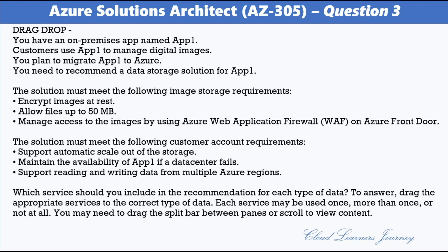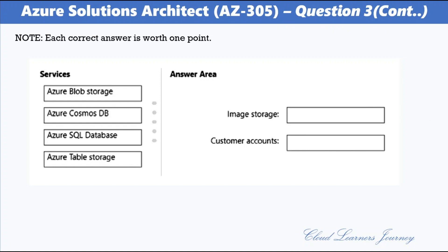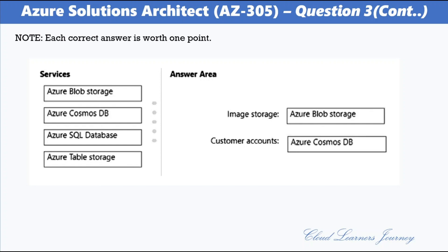Which service should you include in the recommendation for each type of data? Available services are: Azure Blob Storage, Azure Cosmos DB, Azure SQL Database, and Azure Table Storage. For image storage, the answer is Azure Blob Storage. For customer account, the answer is Azure Cosmos DB. Azure Front Door accelerates the delivery of static content from Azure Storage Blobs and enables a secure and scalable architecture.